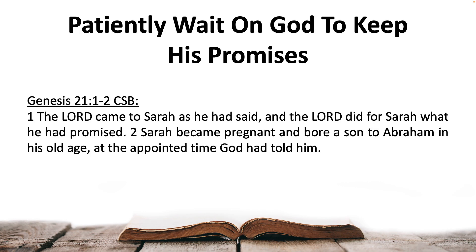Genesis 21:1-2 says: The Lord came to Sarah as he had said, and the Lord did for Sarah what he had promised. Sarah became pregnant and bore a son to Abraham in his old age at the appointed time God had told him.